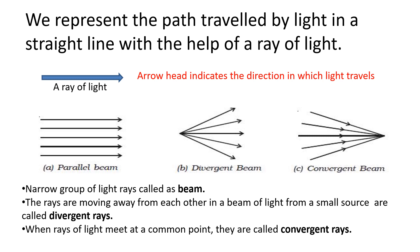And the rays are moving away from each other in a beam of light from a small source are called divergent rays. When rays of light meet at a common point, they are called convergent rays as you can see in the figure.